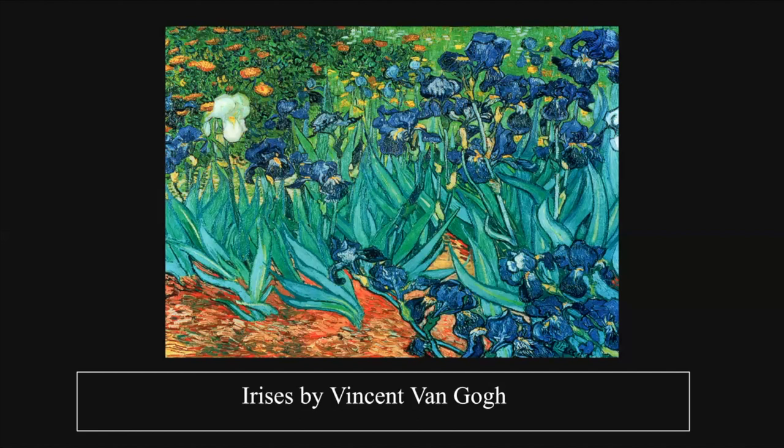After his stay at the asylum, Van Gogh decided to stay at Auvers, a village in France, to be under the care of Dr. Paul Gachet. During his time living there, Vincent painted many more paintings such as Church at Auvers, House at Auvers, Field with Flowers Near Auvers, the Town Hall of Auvers, the House of Dr. Gachet, and lastly, Wheatfield with Crows, which was his last painting, created days before his death in July 1890.